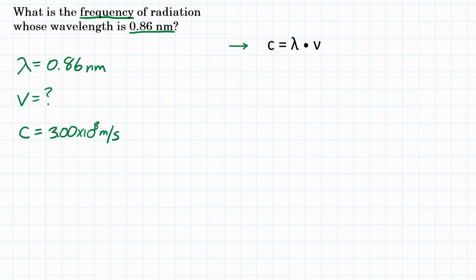So we have two of the three variables and we can solve for the one we do not know. Let's manipulate our equation. We want frequency, so we need to get it by itself. So if we divide both sides of this equation by wavelength,